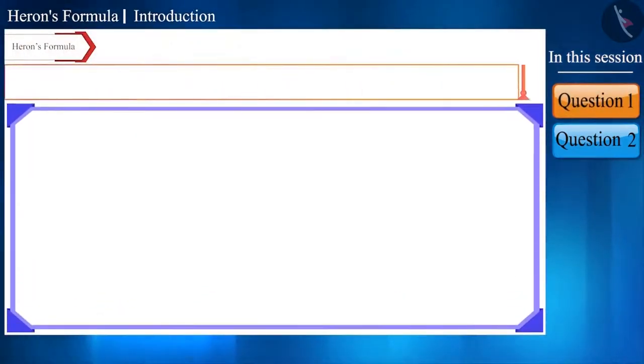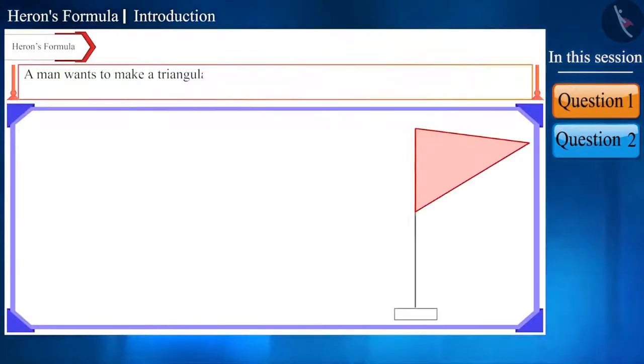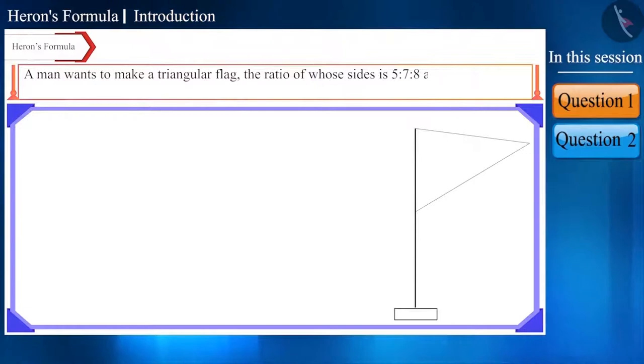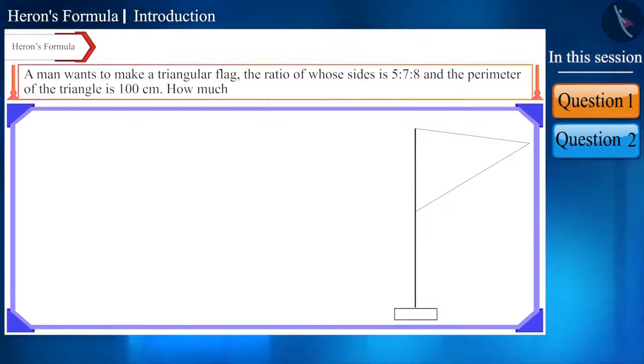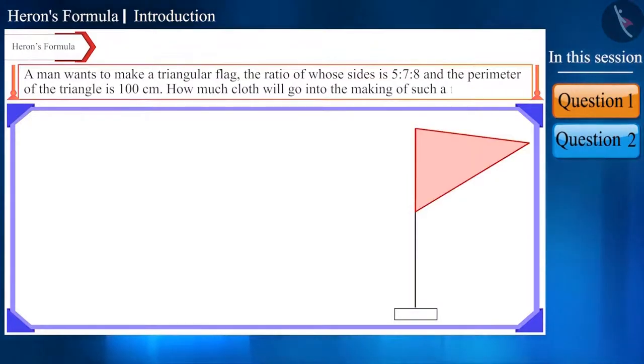So let's start with this question. A man wants to make a triangular flag, the ratio of whose sides is 5 is to 7 is to 8. And the perimeter of the triangle is 100 cm. How much cloth will go into making of such a flag?